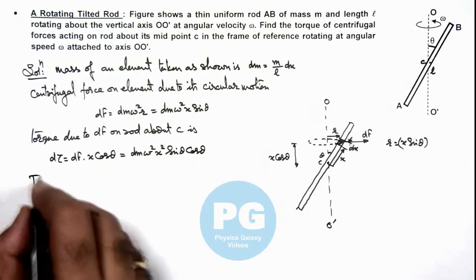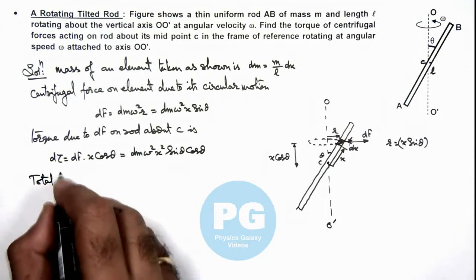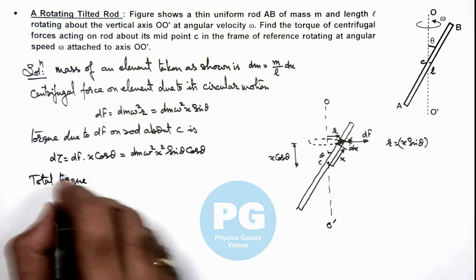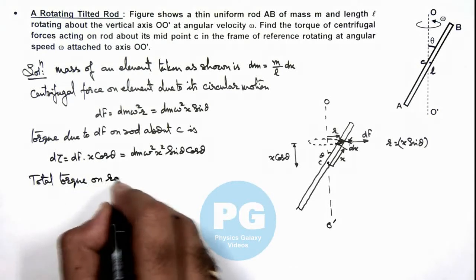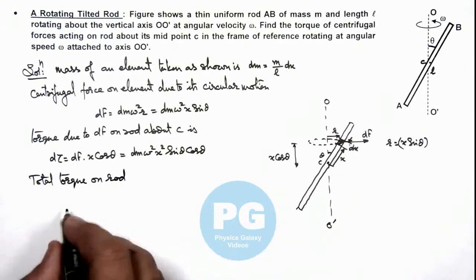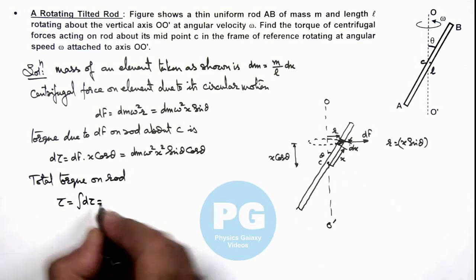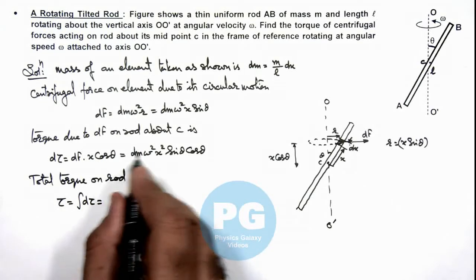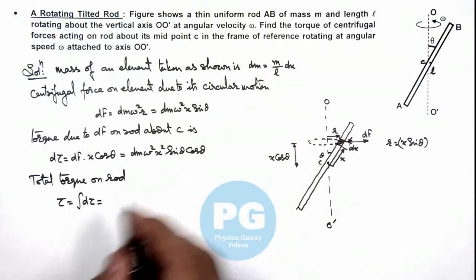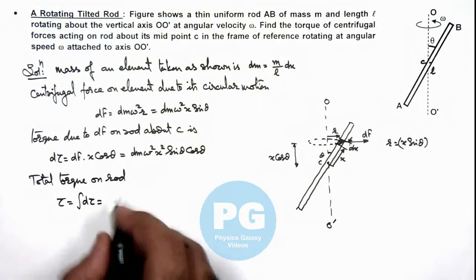Here we can write total torque on rod for all the centrifugal forces we can write as integration of d tau. And here dm also we can substitute as m by l dx. Then this will give us: